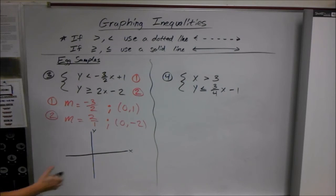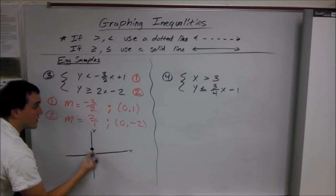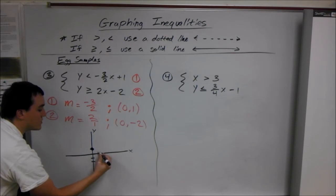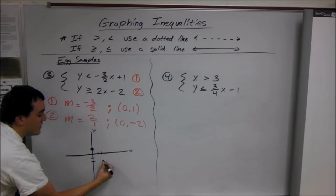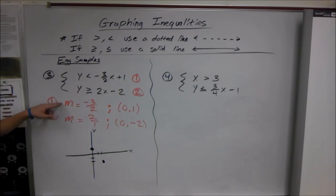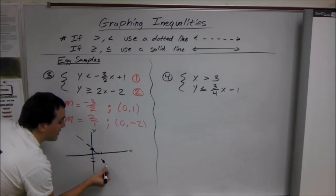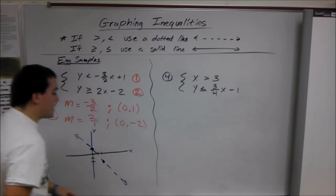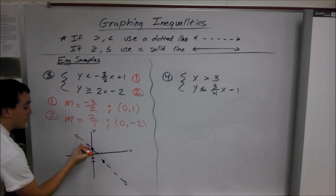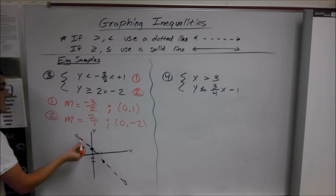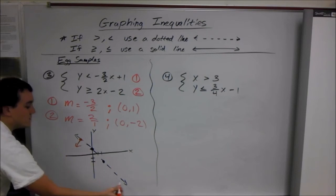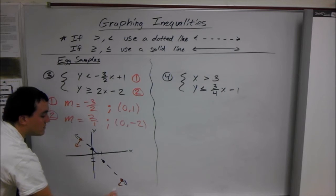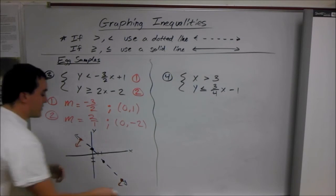So our first line starts at 1 on the y-axis, and we go down 3 over 2. So down 1, 2, 3, over 2. There's our next point. And our first line is less than, so it's a dotted line, and we shade less than that line. So it's everything below it. But we don't want to shade right yet, because we don't know where our other line is going to hit. So pick a point, and it's everything less than that point, so you go straight down. So we know our line, under this line, we're shading everything under it.